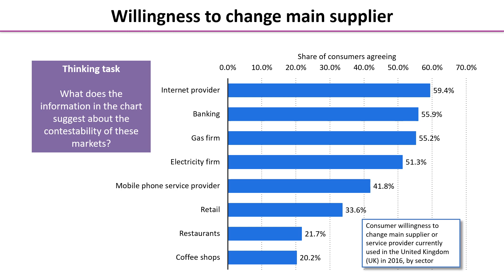Here's another thinking task: look at the chart and think about what this information suggests about the contestability of these markets. We see a lot of difference in how willing consumers are to change their main supplier. If a consumer is not willing to change, new entrant firms are going to have a very difficult time entering a market and its contestability will be greatly reduced.